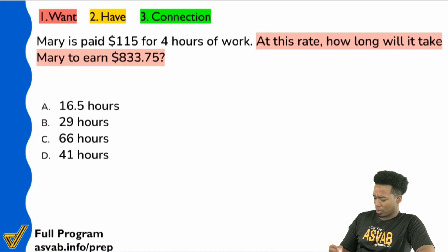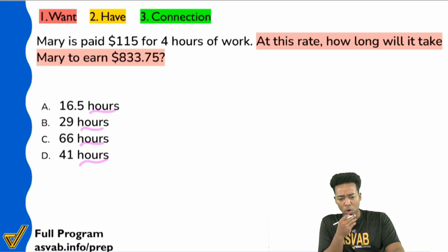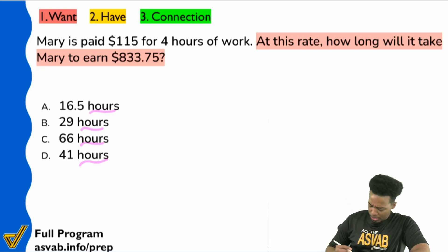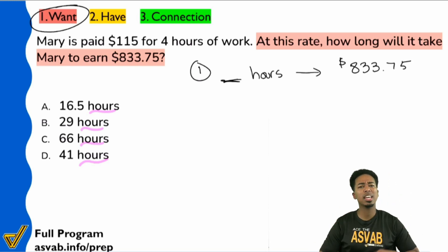At this rate, how long will it take Mary to earn $833.75? Okay, cool. If I look at the answer choices, I see that it says hours on all of these. Okay, so everyone, if you're here with me, is it fair to say that what we're looking for, what we want, is the number of hours, blank hours, that will give us $833.75? Absolutely.